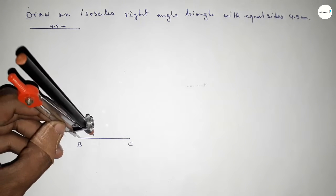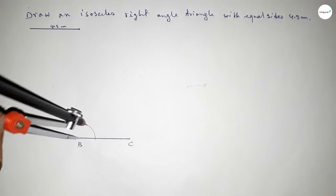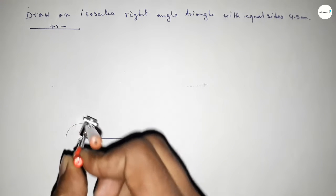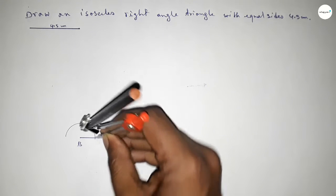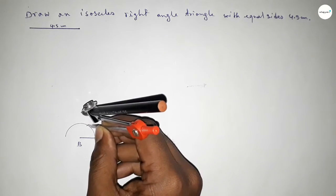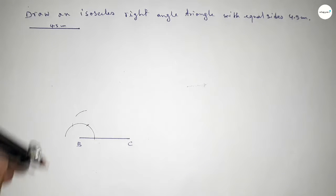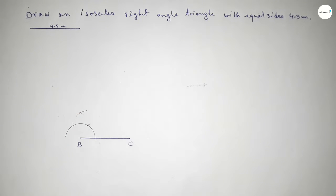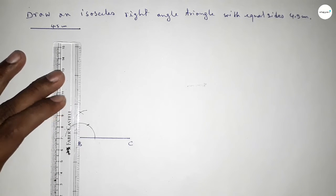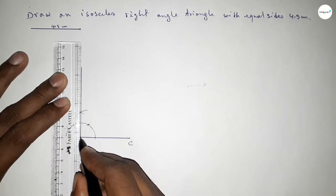Now we have to draw a 90 degree angle at point B. Putting the compass on point B and taking any length, drawing an arc. With the same length, putting the compass at the new point and cutting another arc. Again with the same length, putting the compass and cutting here, so both curves intersect at a point.